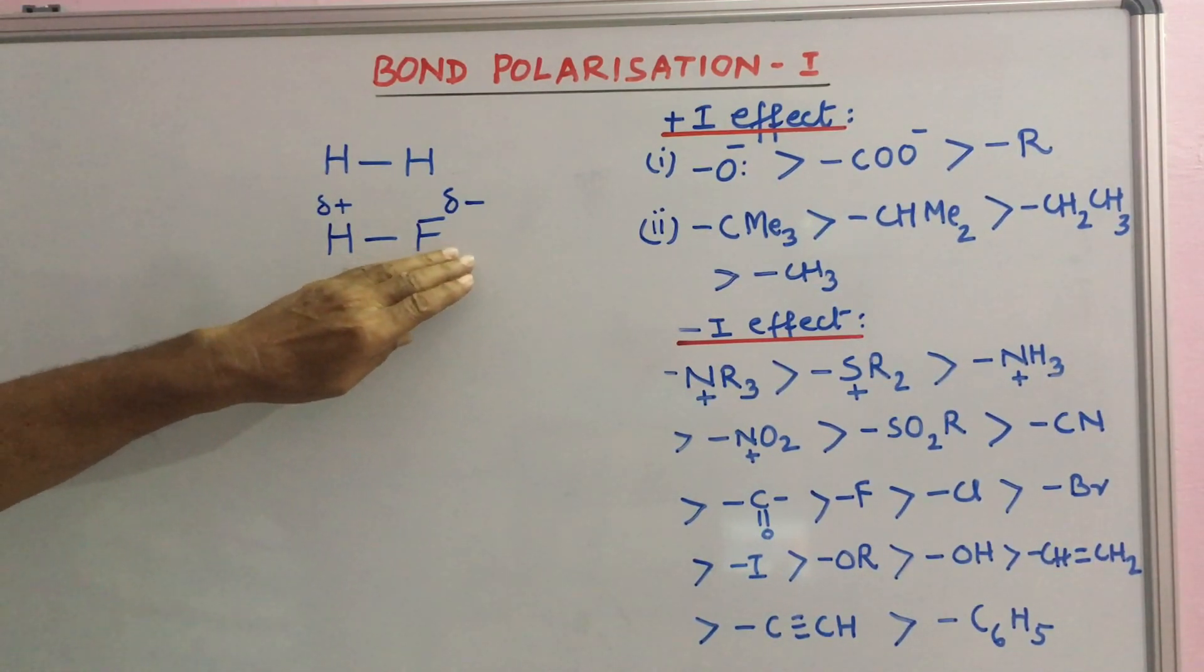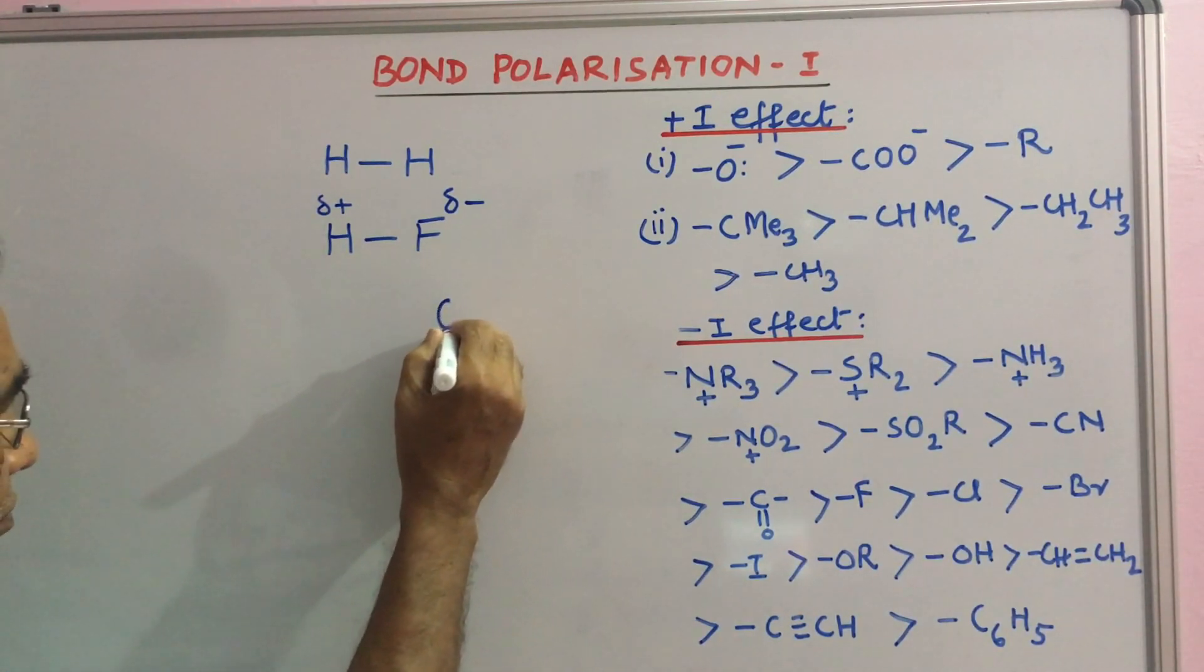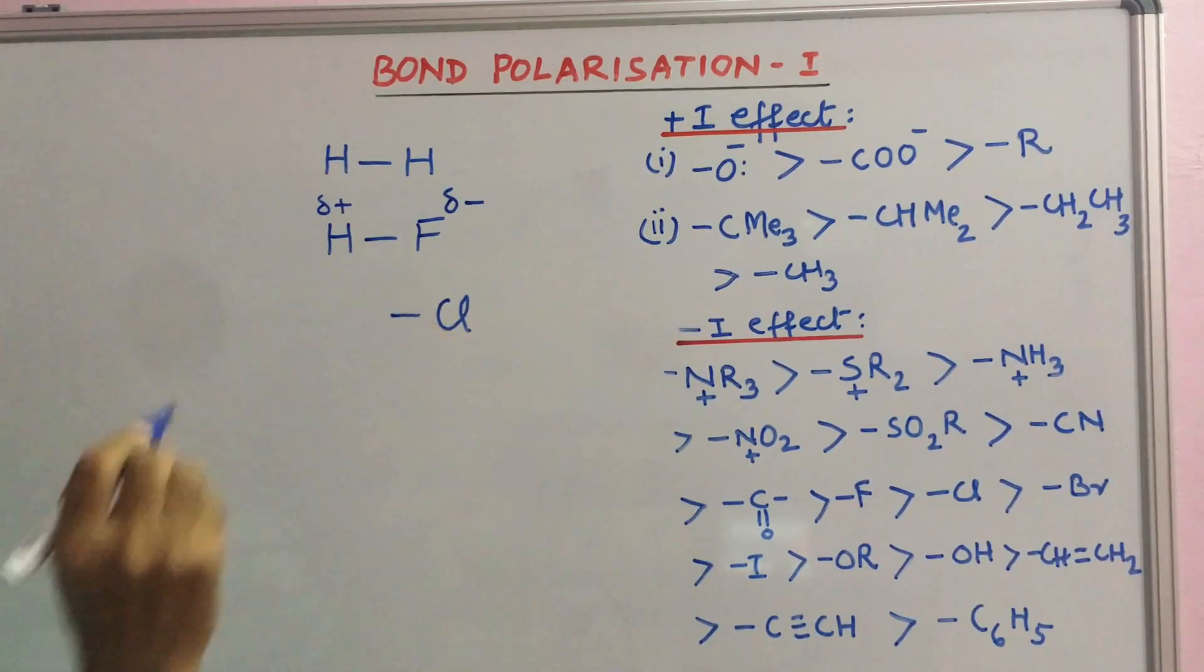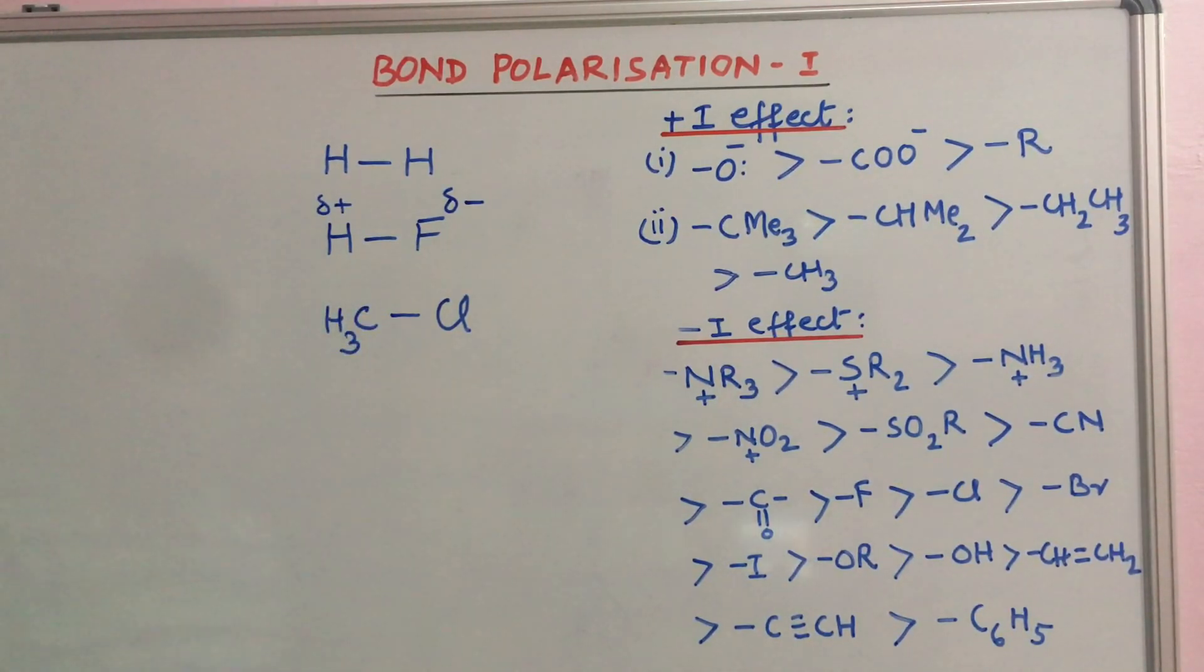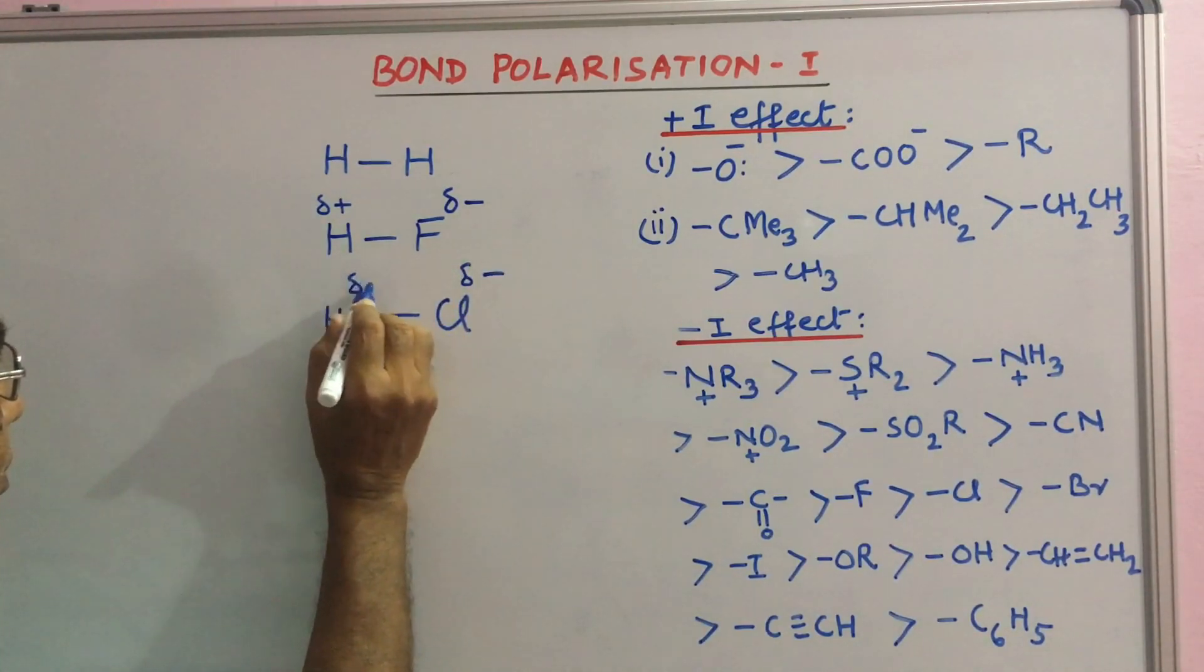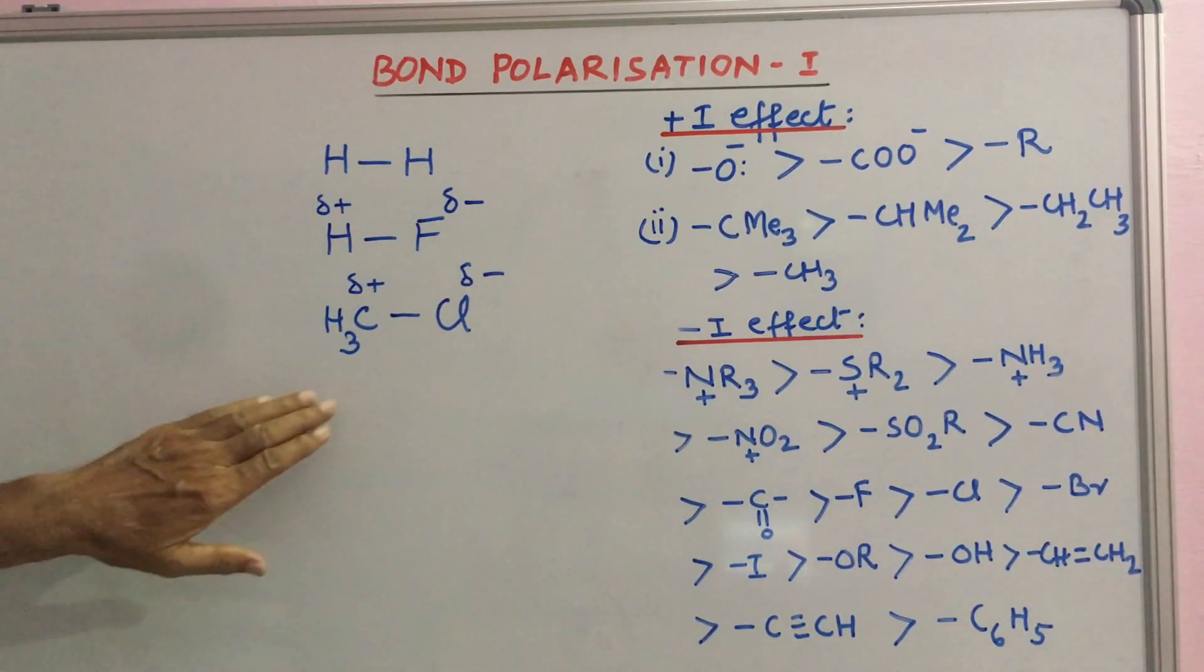Now, if a Cl or F atom is joined to a carbon atom, say in methyl chloride, similar charges develop. Cl acquires delta minus charge and C acquires delta plus. This is a polar molecule.